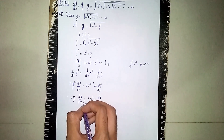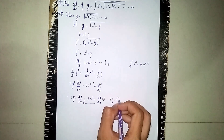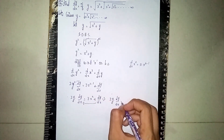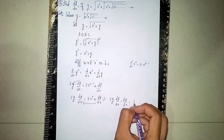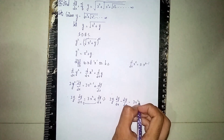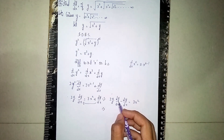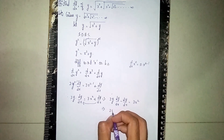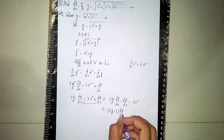Send dy/dx to the left side: 2y · dy/dx − dy/dx = 3x². Taking dy/dx as common: (2y − 1) · dy/dx = 3x².